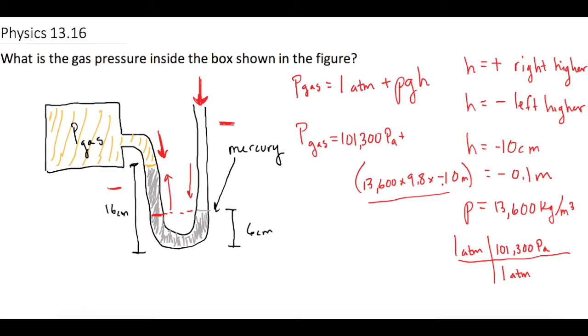If it was the same pressure on both sides, the mercury would be level with each other. Let's say this was the tube, and if the gas had a higher pressure, then the mercury would be up here.